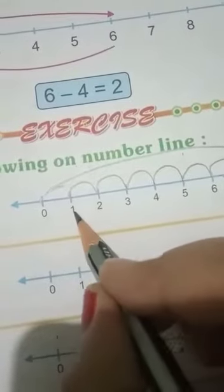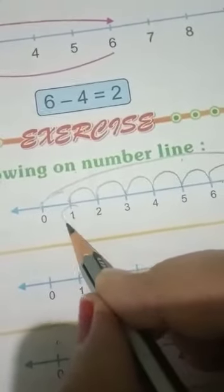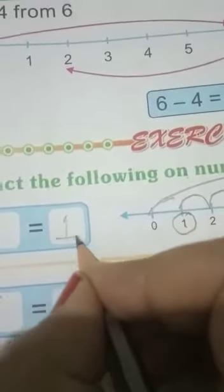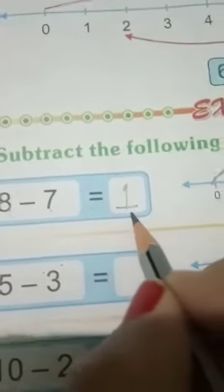Now where are you? At 1. Your answer is 1. Write down in the box. 8 minus 7 is equal to 1.